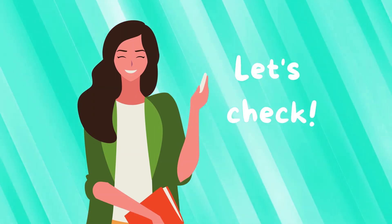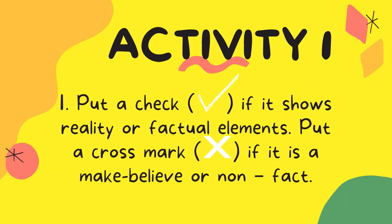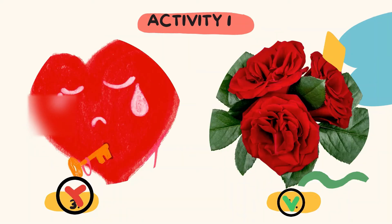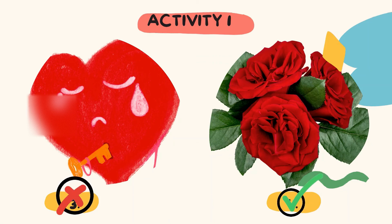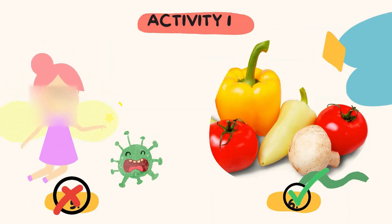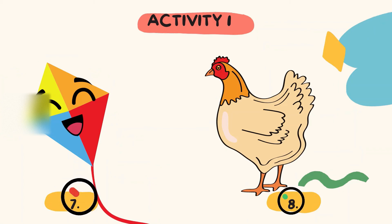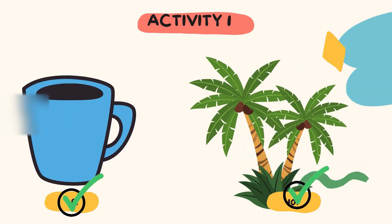For Activity 1, here are the answers. One: check. Two: cross. Three: cross. Four: check. Five: cross. Six: check. Seven: cross. Eight: check. Nine: check. Ten: check. Those are the answers for Activity 1.